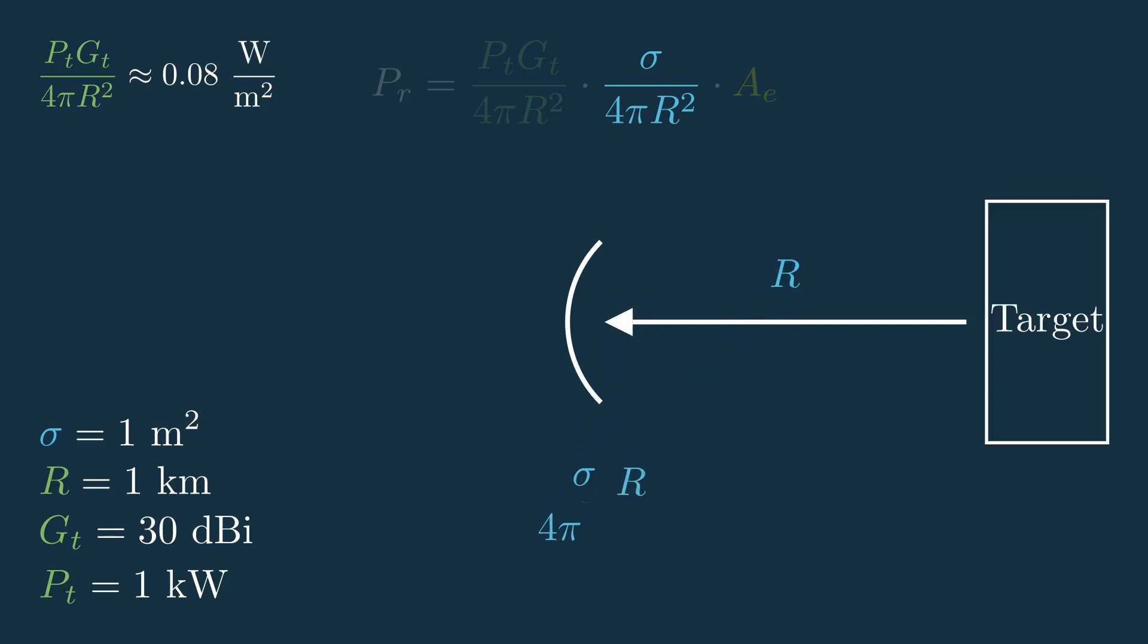The units for this whole second component will be meters squared over meters squared, which will both cancel out and give us a unitless scalar term that'll make our signal even smaller. In this case, it comes out to about negative 71 dB, or an incredibly small factor of 8 times 10 to the negative 8th.